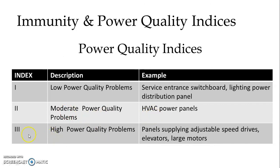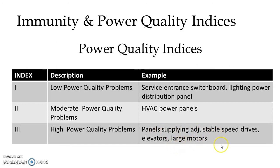At index three we have high power quality problems. Examples for high power quality problems include panels supplying adjustable speed drives, elevators, and large motors.